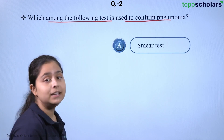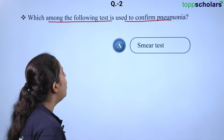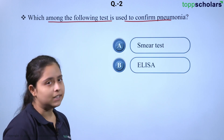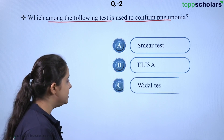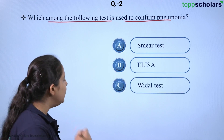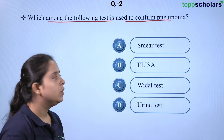Option A is smear test. Option B is ELISA. Option C is Widal test, and the last option D is urine test.